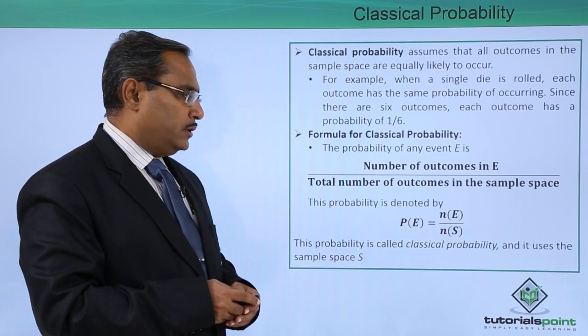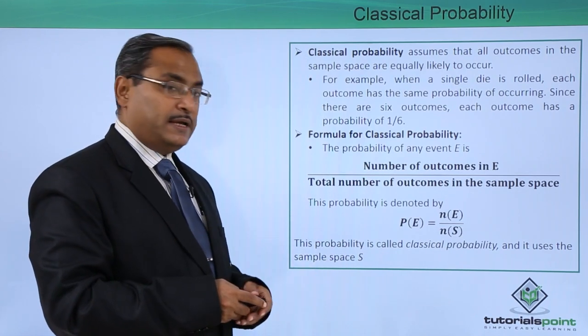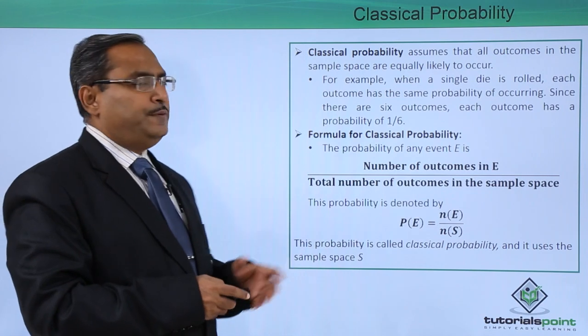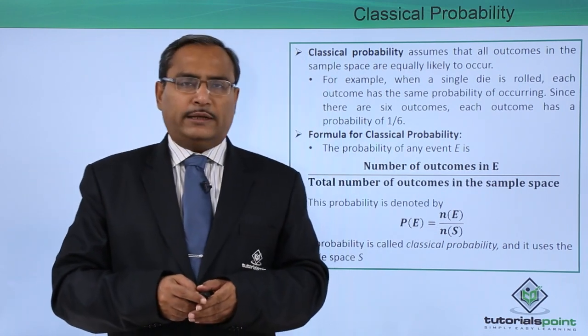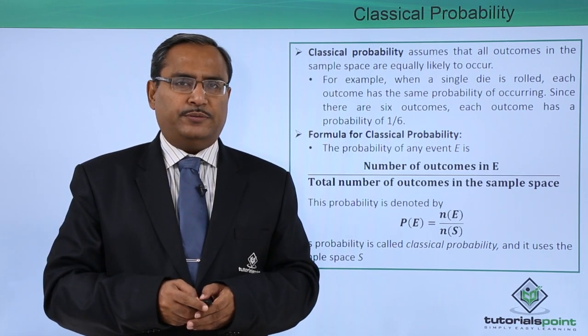This probability is called classical probability and it uses the sample space S. Thus, in this video we have discussed what is classical probability with one example. Thanks for watching this video.